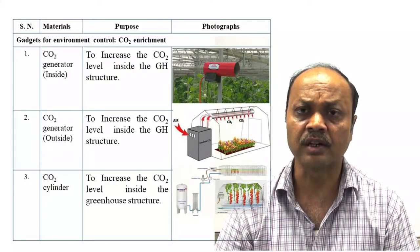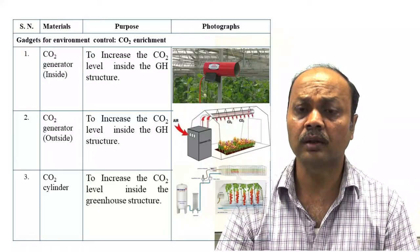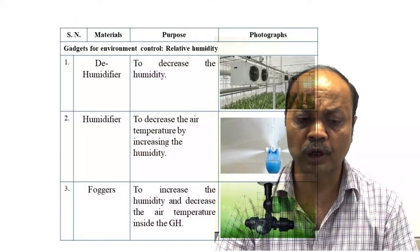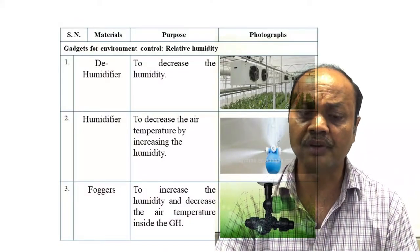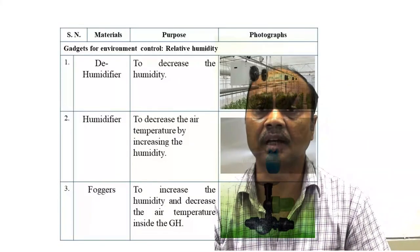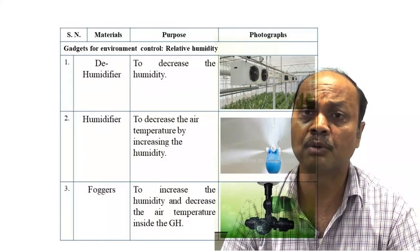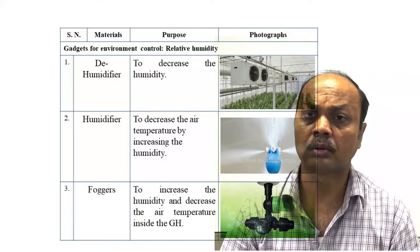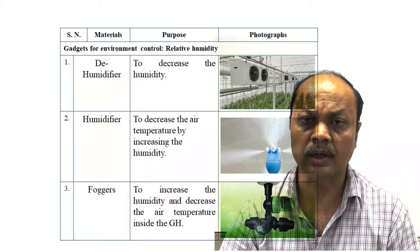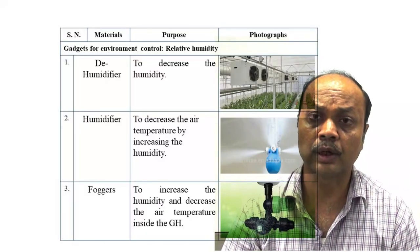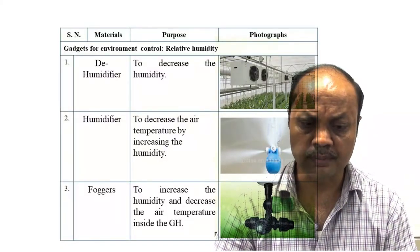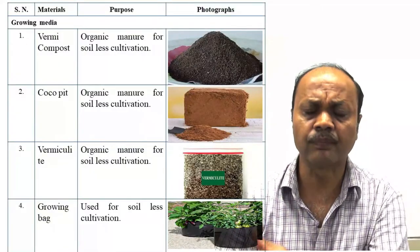For CO2 enrichment, CO2 cylinders are used for small greenhouses, or CO2 generators can be placed inside or outside. In winter, when the greenhouse is closed at night, due to respiration a lot of CO2 builds up, and in the morning hours CO2 concentration is high, which can enhance photosynthesis. Normal air has about 300 ppm CO2. For humidity control, dehumidifiers decrease humidity and humidifiers increase it. Decreasing humidity is more complicated and costly.